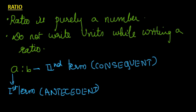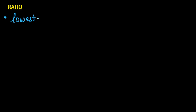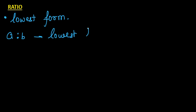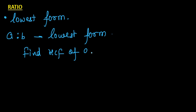Whenever a ratio is given to you, it is always preferred that the ratio be written in its lowest form. By lowest form, we mean — as we learned in fractions — we cancel out all the common factors from the numerator and denominator. To convert a ratio A is to B to its lowest form, find the HCF of A and B and cancel out the common factor.